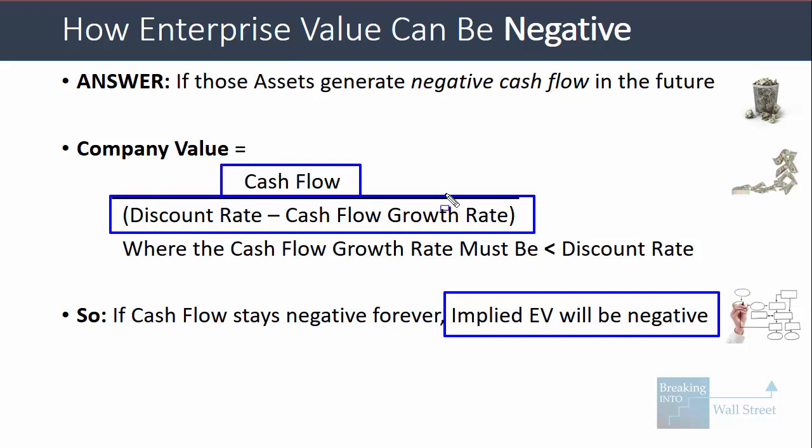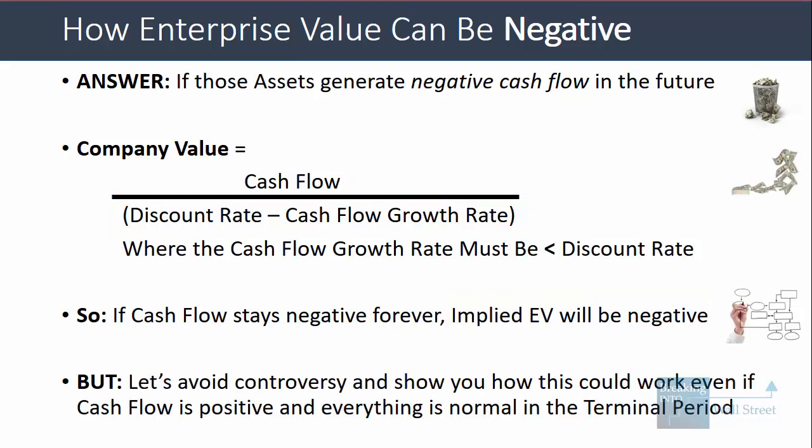Some people argue that you can't use this formula when cash flow is negative and that we must assume positive cash flow. So let's avoid that controversy and show how you could have a company with positive cash flow in its terminal period and still arrive at a negative implied enterprise value.